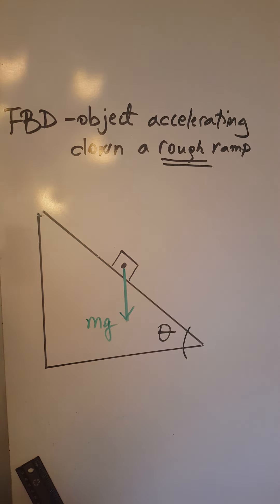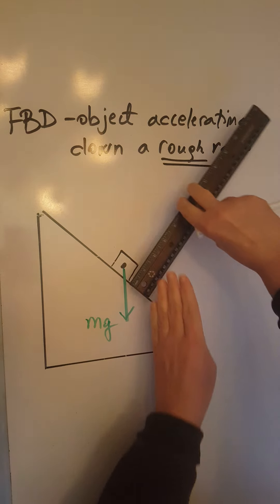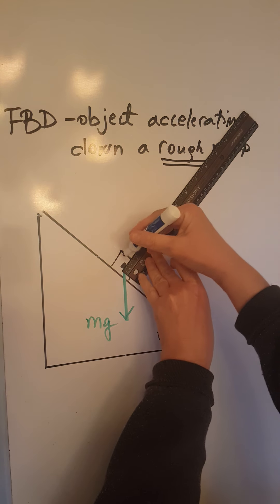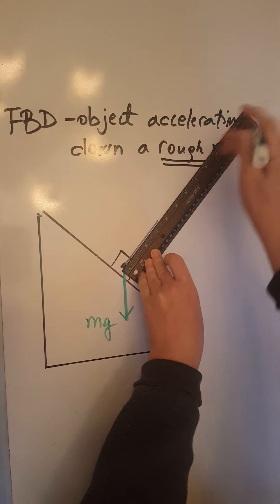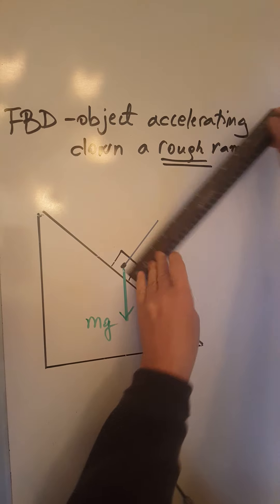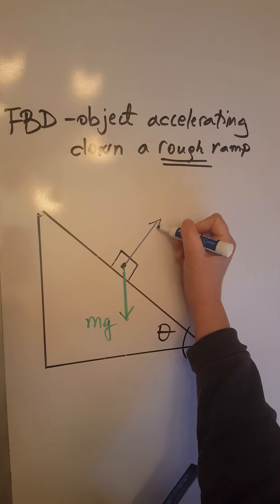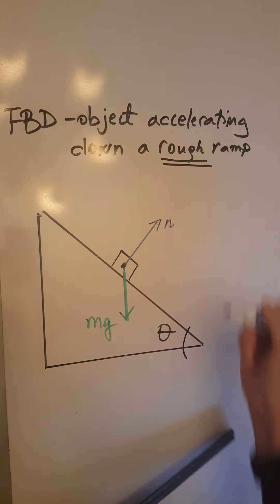The next force acting upon this object is the normal force. The normal force is always perpendicular to the surface. Starting from the center of the object, draw the force perpendicular to the ramp going upwards, and label it little n.